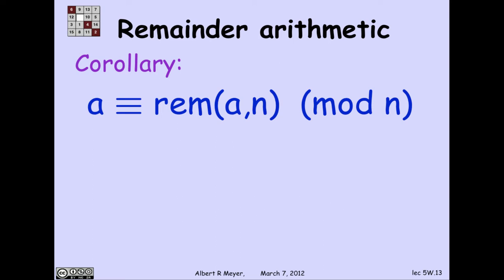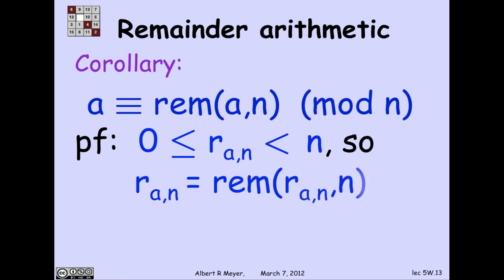Let's prove it by showing that a and the remainder of a have the same remainder. Well, if I take remainders of both sides, the left-hand side becomes the remainder of a divided by n. The right-hand side is the remainder of the remainder. But the point is that the remainder is in the interval from 0 to n. And that means when you take its remainder mod n, it's itself.